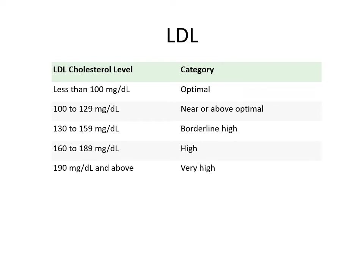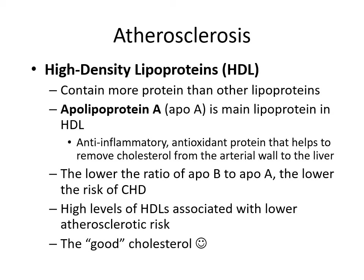Here we have our numbers for LDL — we'd like to see less than 100. Looking at high density lipoproteins, these contain more protein, which is why they're denser than other lipoproteins. Apolipoprotein A or APOA is the main lipoprotein in HDL. It's an anti-inflammatory antioxidant protein that helps to remove cholesterol from the arterial wall to the liver — this is the good one. The lower the ratio of APOB to APOA, the lower the risk of coronary heart disease, and high levels of HDLs are associated with lower atherosclerotic risk.